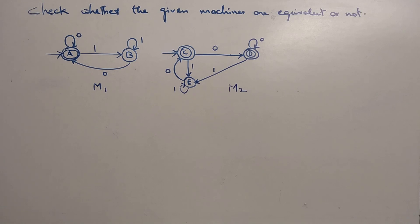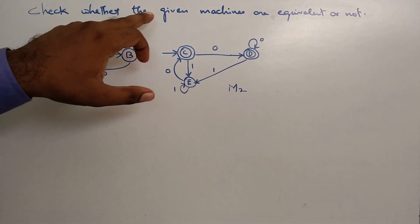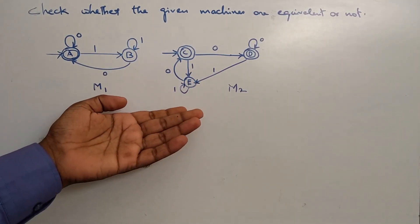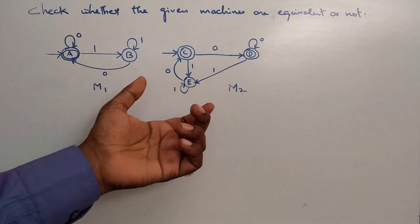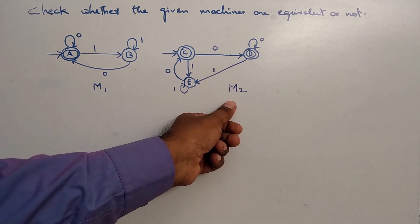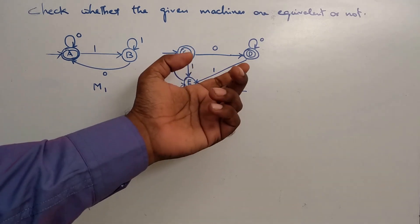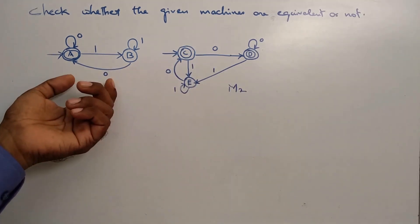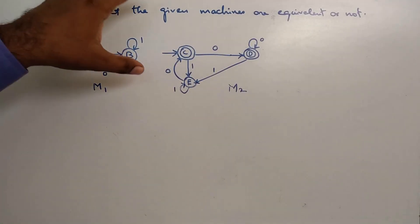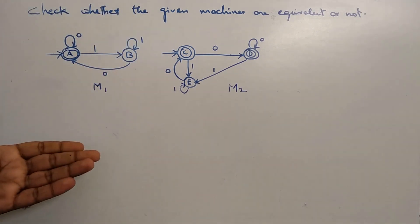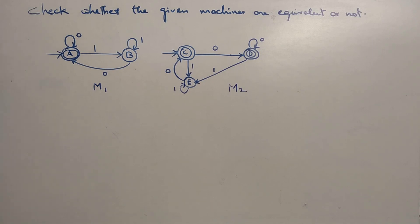In this video, the question is to check whether the given machines are equivalent or not, and find the automata if the two are equivalent. This is another form of minimization of DFA. If the two minimized DFAs are the same, they are equivalent. The topics covered are minimization and equivalence of DFA, and this is a common university exam question.